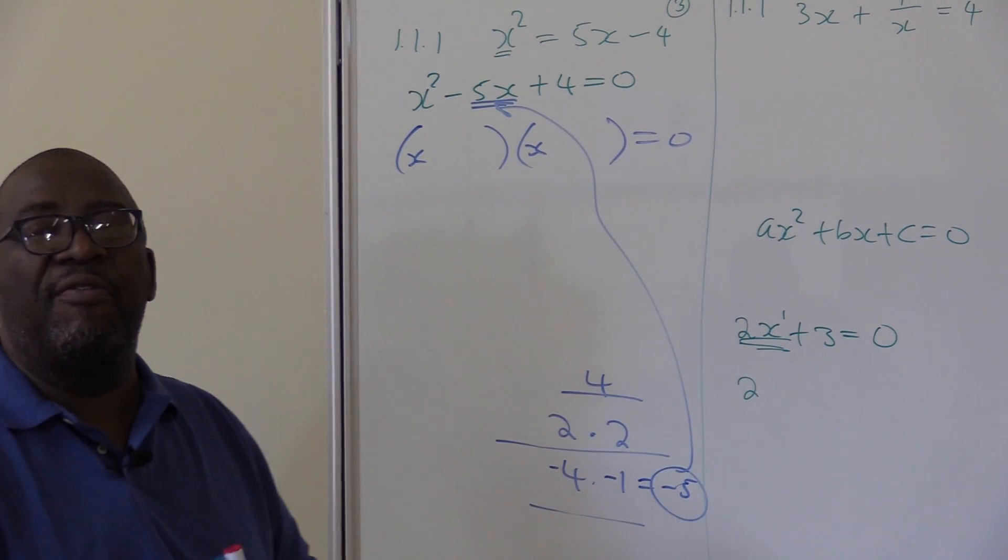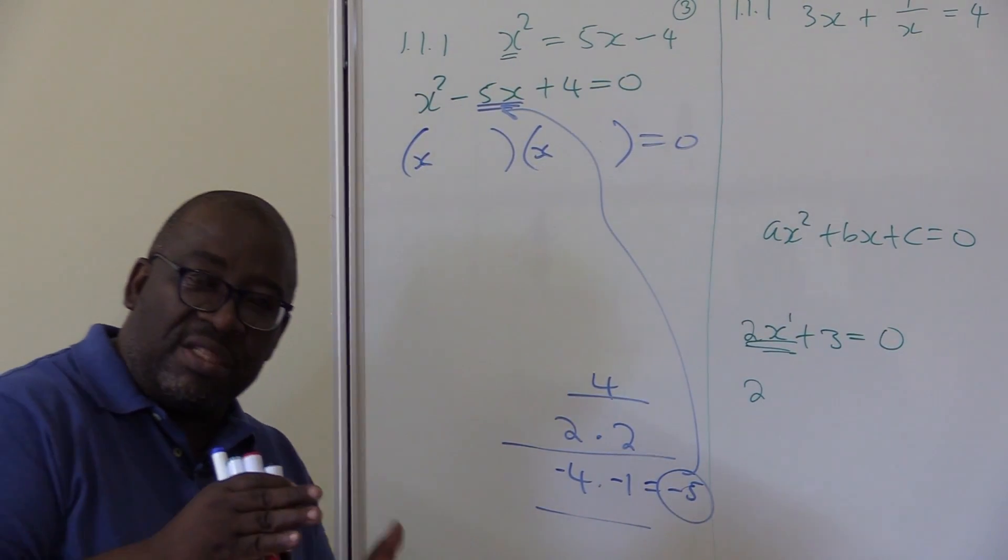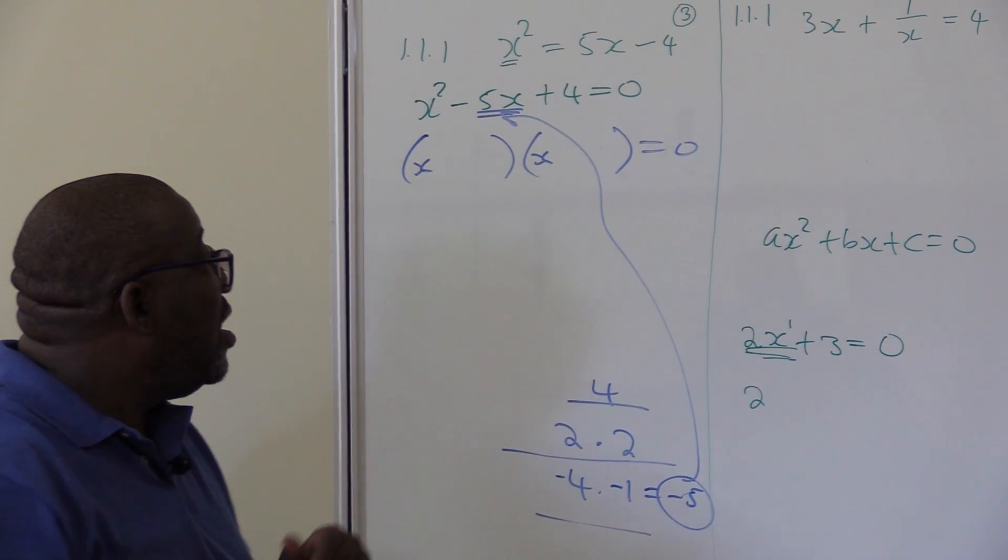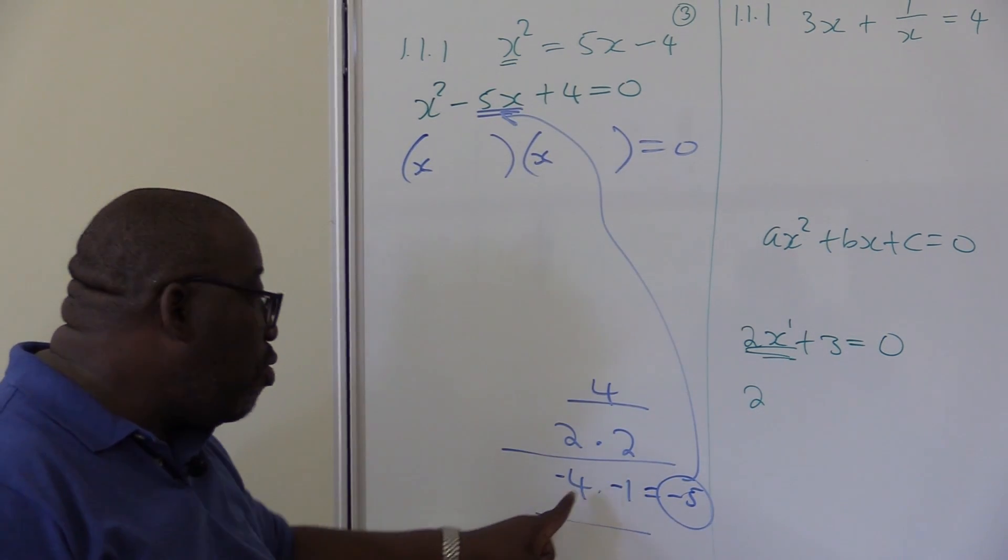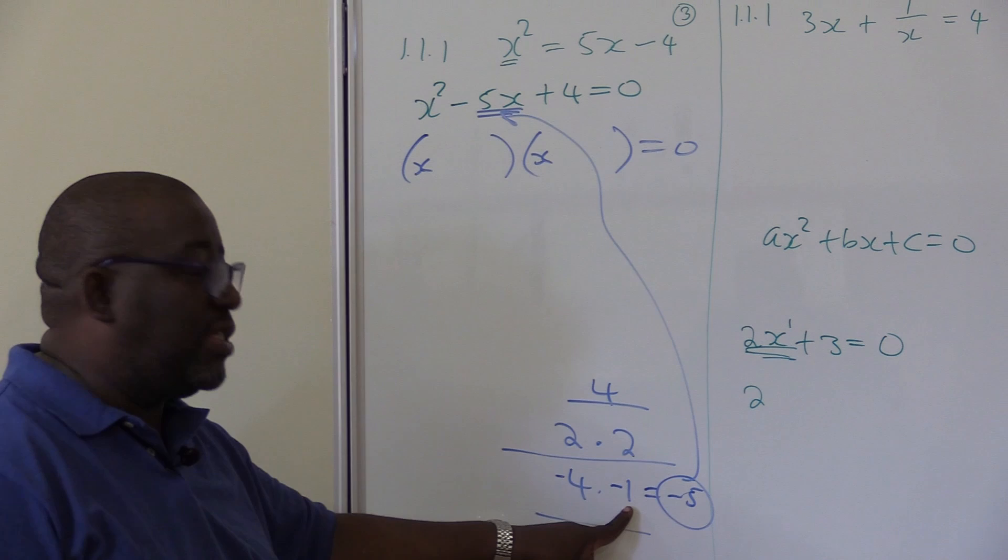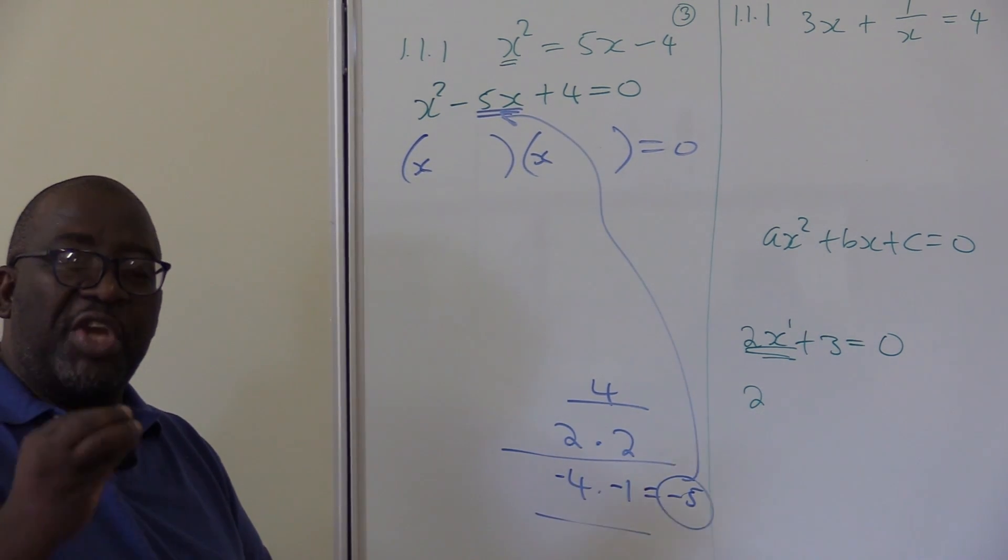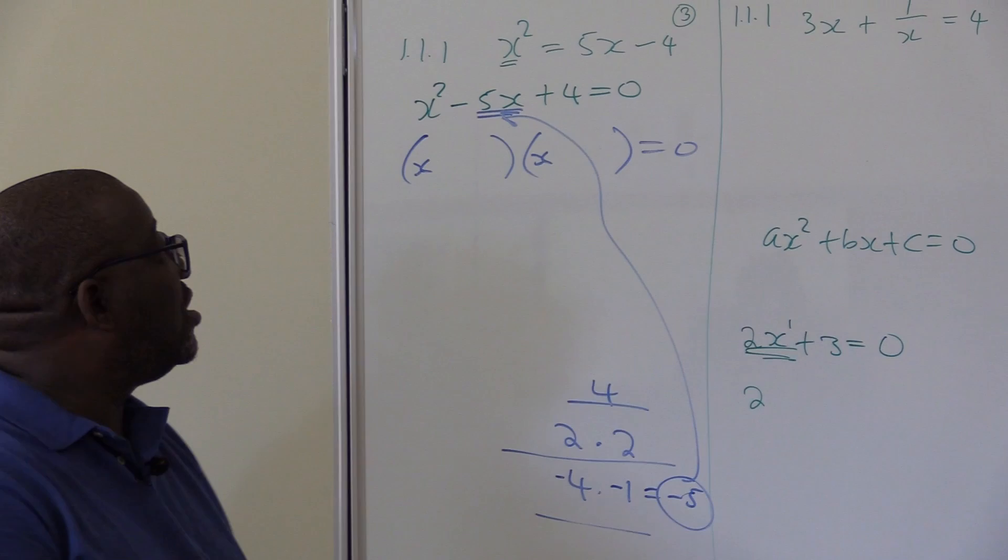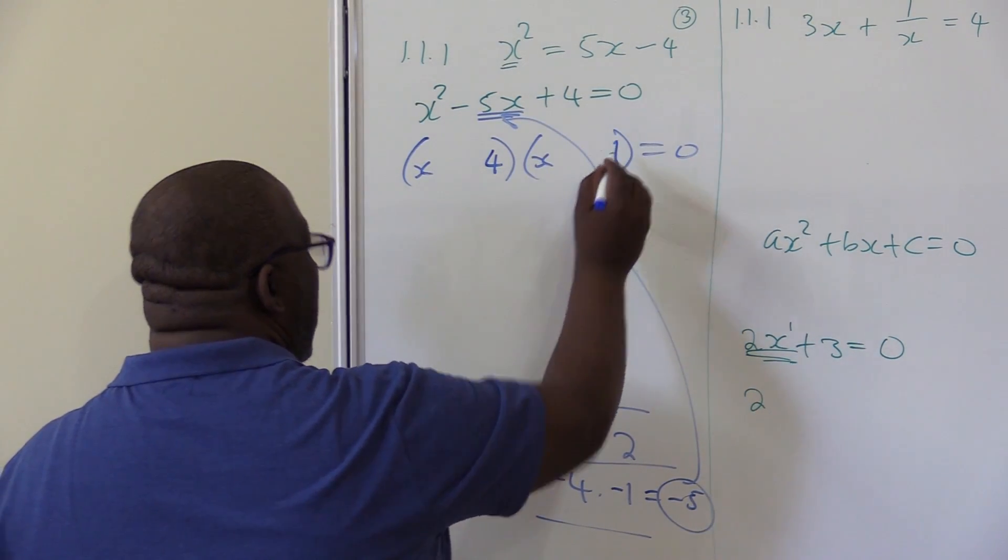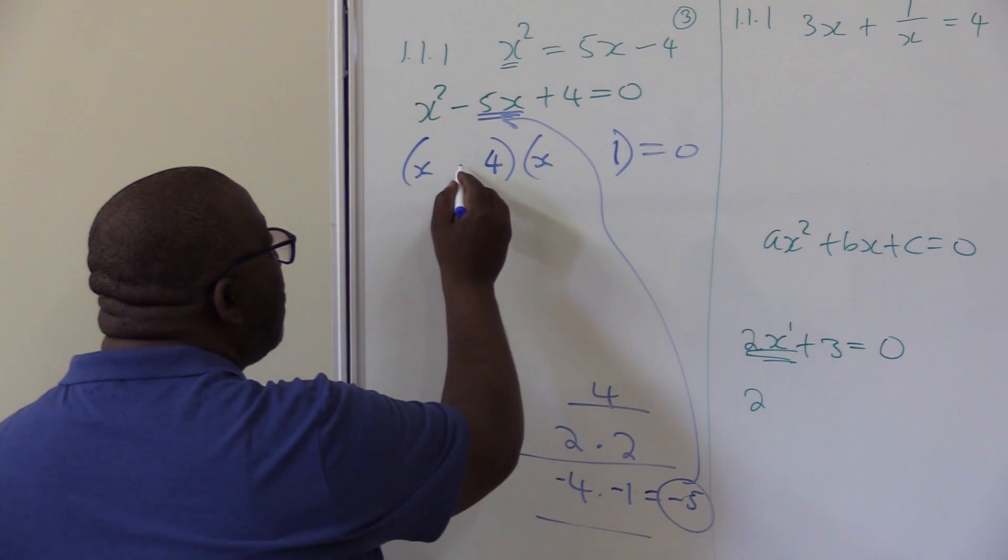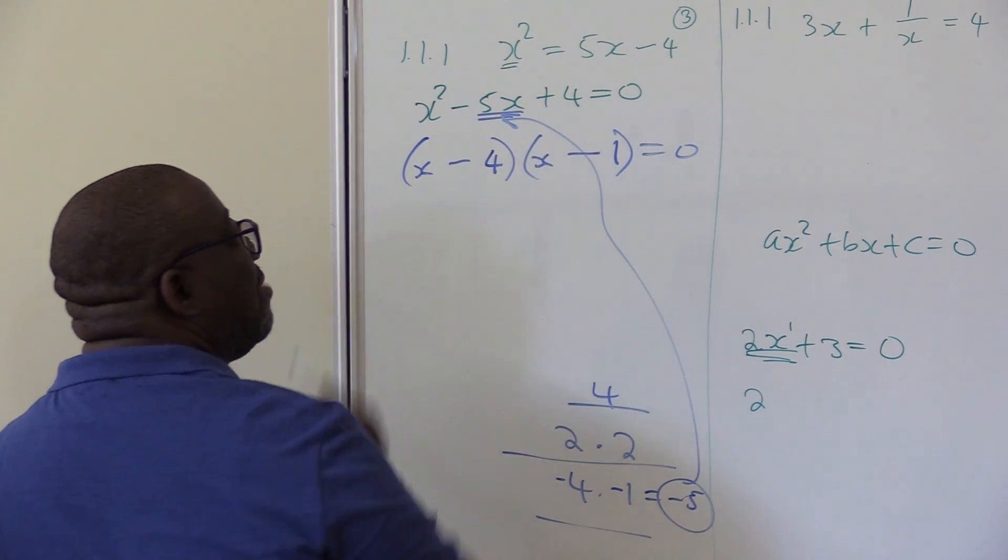So if I make this negative and this negative and I add them together, they will give me minus 5, which is exactly what I need there. So you don't just pick any factors. You pick factors that will give you the middle term when you add them or when you subtract them.